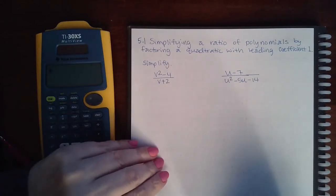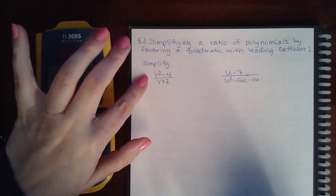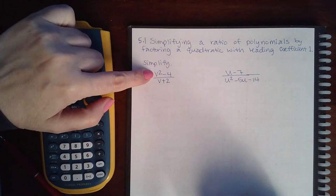Here we have 5.1 simplifying a ratio of polynomials by factoring a quadratic with leading coefficient 1. For this first fraction,